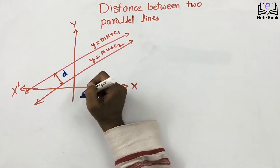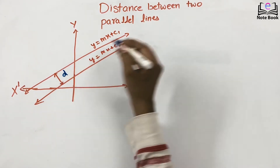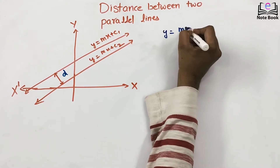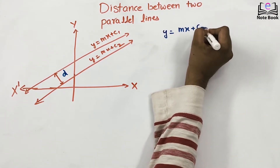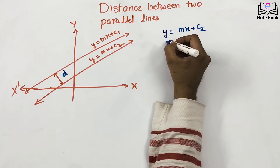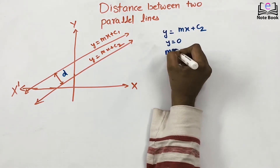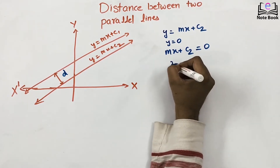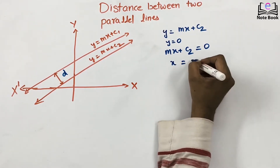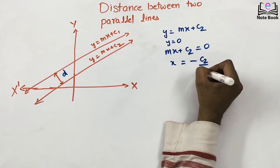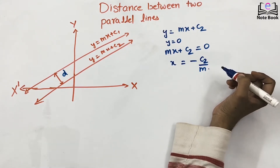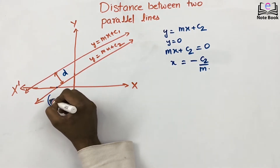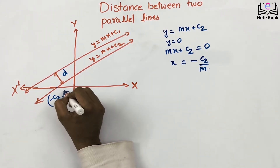Consider this line. The x-intercept of this line — that is the point where y = 0 — applied to y = mx + c2. If y = 0, then mx + c2 = 0, then x = -c2/m. So I will mark it as (-c2/m, 0).